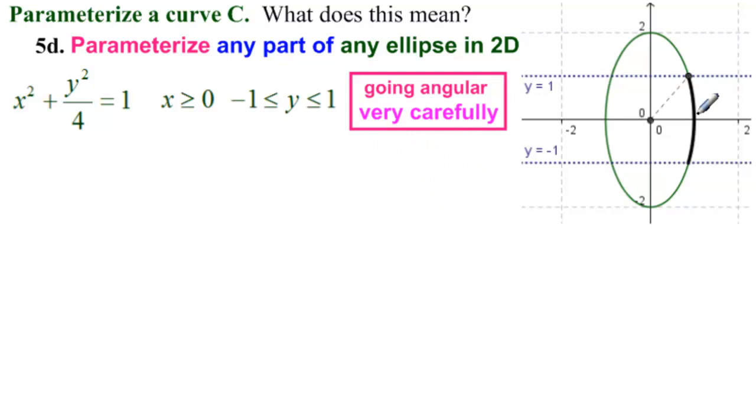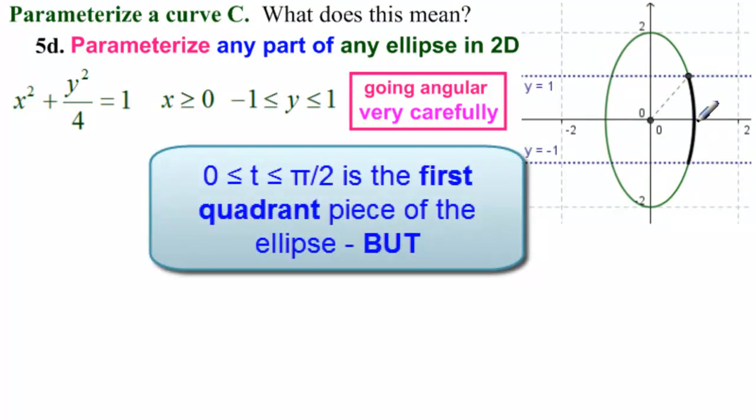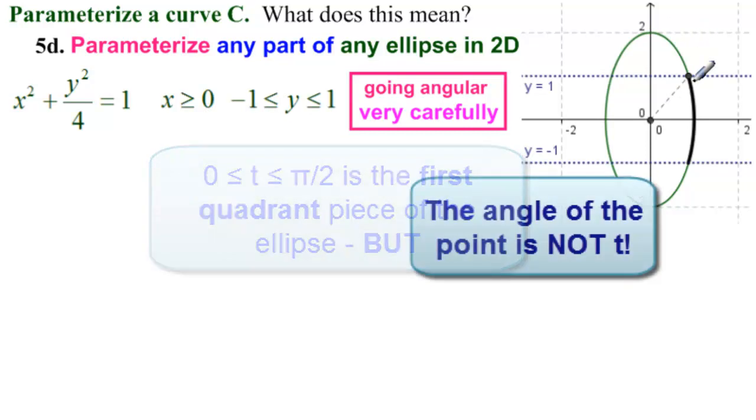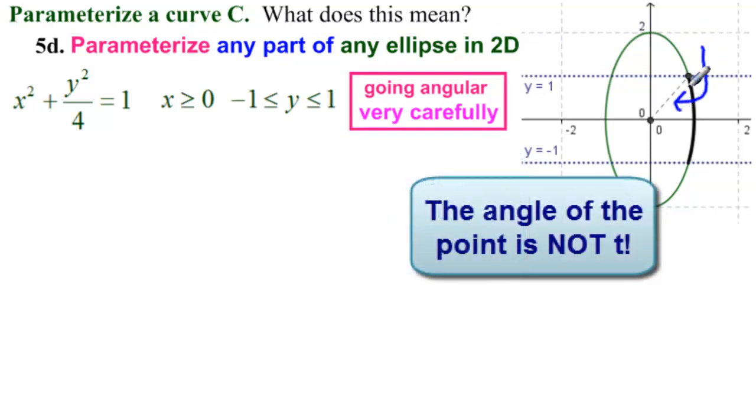The sense is that it's very easy to think that because t goes from 0 to pi halves in the first quadrant, that this angle is t. This angle is most definitely not t. So you cannot measure this angle and say, that's where I need to go, t between minus that and plus that.